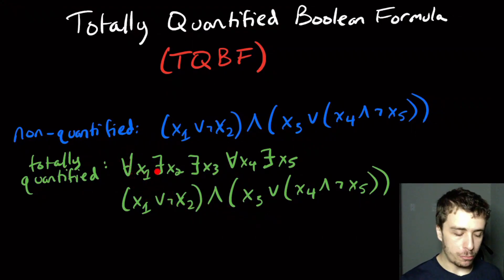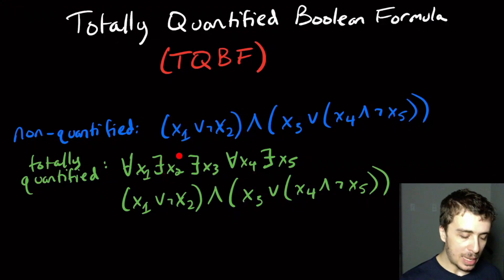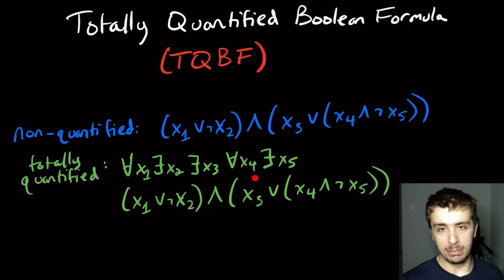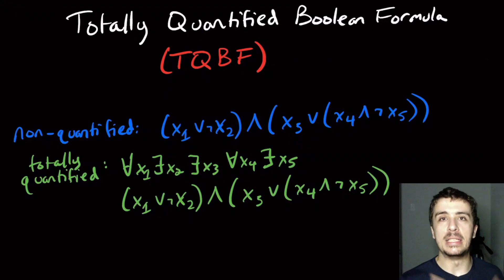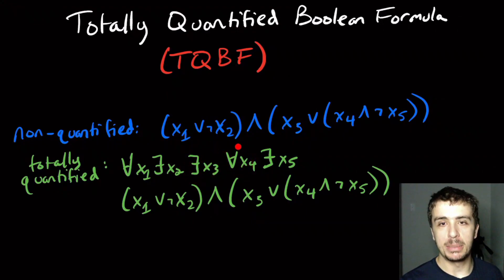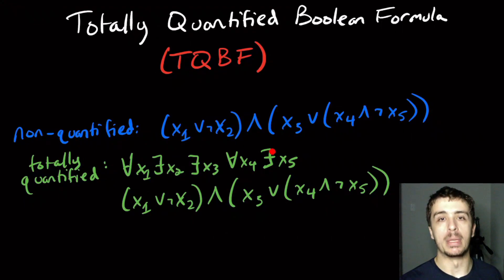The formula must be true for both values of x1 — if x1 is true it has to be true, and if x1 is false it also has to be true. Since x2 has an 'exists' quantifier, at least one of its values has to satisfy the formula. Similarly, x3 is an 'exists,' x4 is a 'for all' so the formula must hold for both values, and x5 is an 'exists' so at least one value must satisfy it.